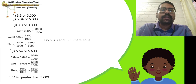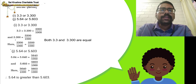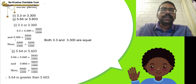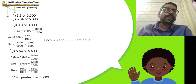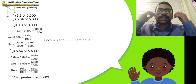Alternatively, write 5.64 as 5.640, so both are expressed as thousandths: 5640/1000 and 5603/1000. Since 100 has three zeros you move three places, confirming 5.640 is greater than 5.603. Therefore 5.64 is greater than 5.603. We will continue with the next part in the next session.